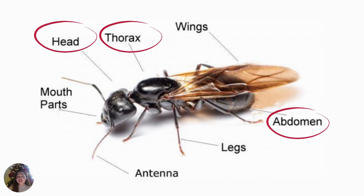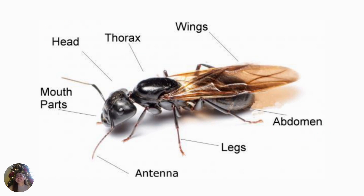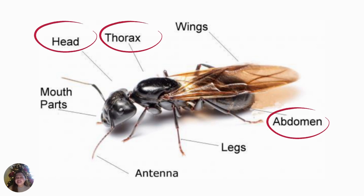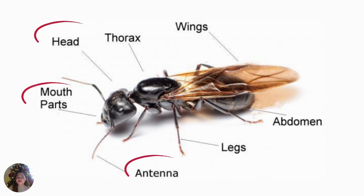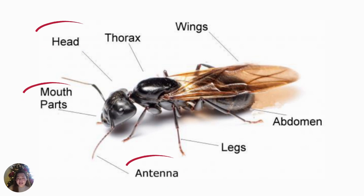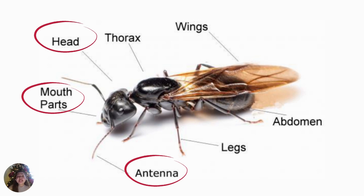Again, what are the three main body parts of the insect? Correct! The head, the thorax, and the abdomen. The head carries the eyes, mouth parts, and the antennae. The antennae are used for feeling, hearing, smelling, and tasting.